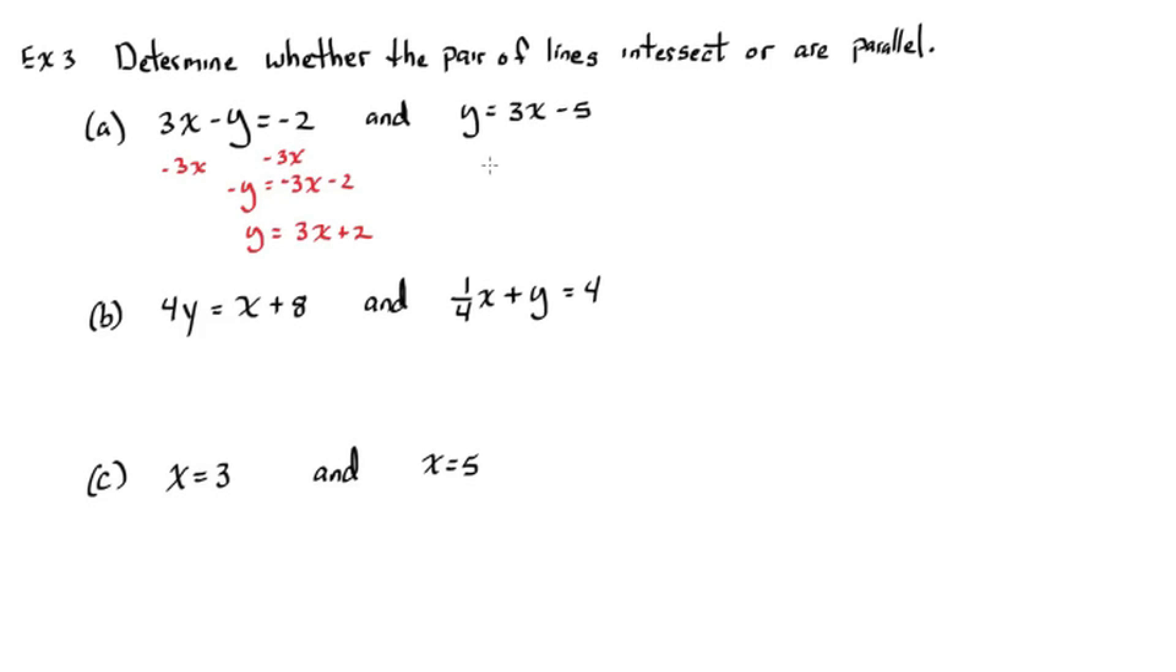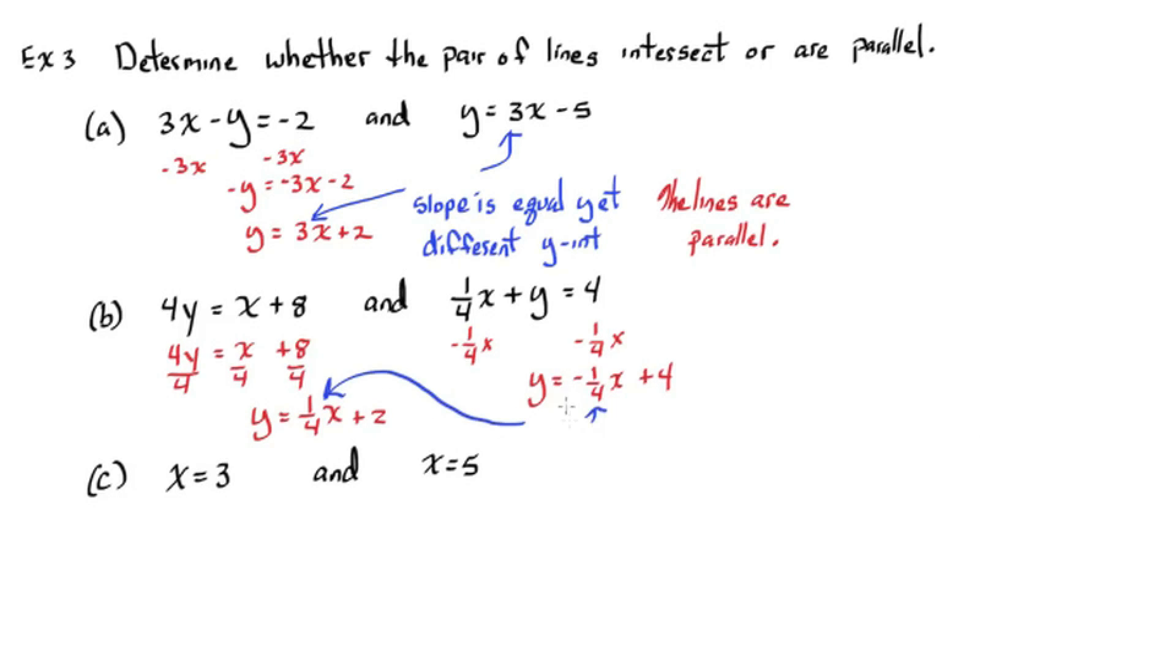So, for part A and B, what we really want to do is put this in slope intercept form. Because we know if the slopes are equal, that means that we have parallel lines, as long as the y-intercepts are different. Because if the y-intercepts are the same, it could be the same line. So, for part A, the lines are parallel. For part B, when we solve and put into y equals mx plus b form, we see that the slopes are almost the same. One is one-fourth and one is negative one-fourth. Well, that's not good enough. These slopes are different, and these lines will intersect. So, they are not parallel.